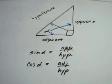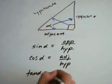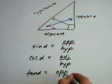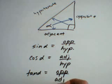And finally, the tangent of the angle is equal to the length of the opposite side from that angle divided by the length of the adjacent side.